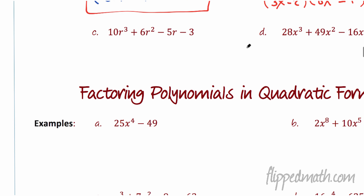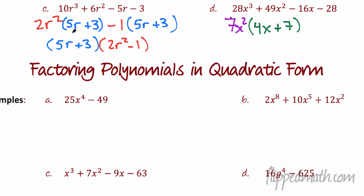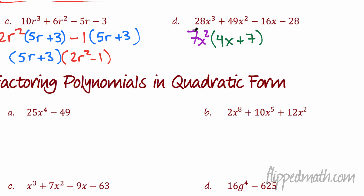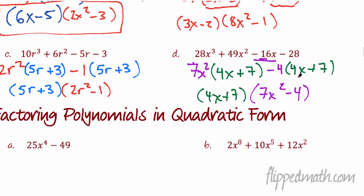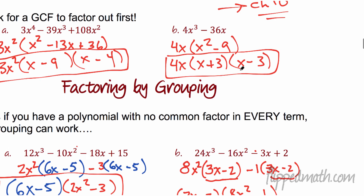Now it's your turn — try letters C and D by yourself. For C, pull out 2r² and you're left with 5r + 3. Then for the second pair, you have negative 5r − 3, so that's a hint: pull out a negative 1, and then you can pull (5r + 3) out front. For D, take out 7x² leaving 4x + 7. Look at the second pair — you need a 4x, so take out a negative 4, which leaves 4x + 7. Then pull (4x + 7) out front, and you're left with (4x + 7)(7x² − 4). If 7 were a perfect square, that would go down further, like x² − 9 up above.